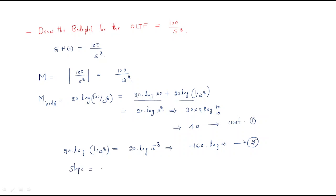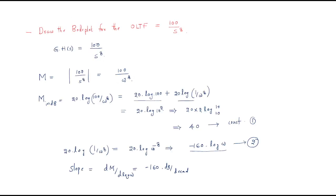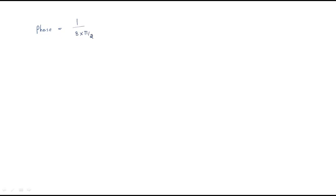The slope is obtained by differentiating the magnitude with respect to log ω, giving -160 dB per decade. For the phase: since we have s^8 in the denominator (8 poles at the origin), the phase is -8×(π/2) = -8×90° = -720°. This is a constant phase for all frequencies.